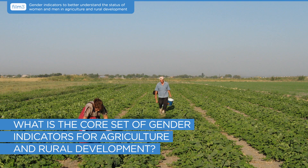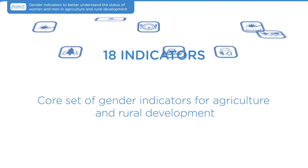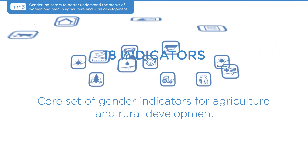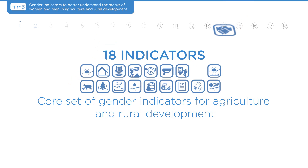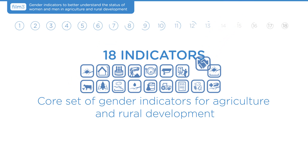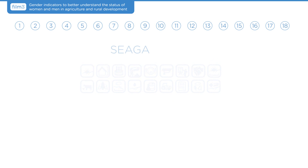The Core Set of Gender Indicators for Agriculture and Rural Development includes 18 indicators useful to guide the collection of sex-disaggregated data in agriculture for a basic gender analysis of the sector. They are framed by the six basic SEGA questions.